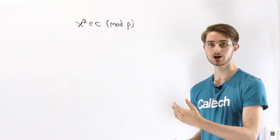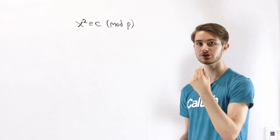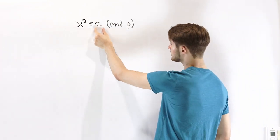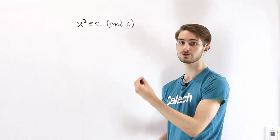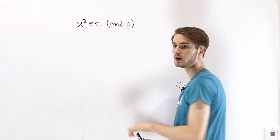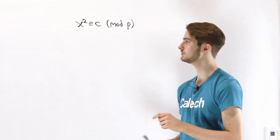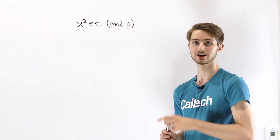The idea of quadratic residues comes from this form of a congruence. For some integer c that we choose beforehand, we want to see if we can solve the congruence x squared is congruent to c mod some prime number p. This congruence doesn't always have a solution if we set a fixed value c.